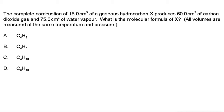In this problem we have the complete combustion of 15.0 cm³ of a gaseous hydrocarbon X that produces 60.0 cm³ of carbon dioxide gas and 75.0 cm³ of water vapor. What is the molecular formula of X? Note that all volumes are measured at the same temperature and pressure.